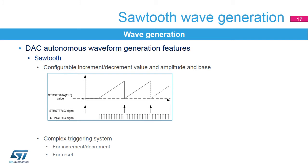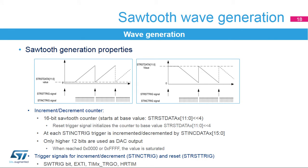The sawtooth counter starts from STRST data; each increment trigger then increments or decrements the ST INC data value. The increment trigger and reset trigger must be selected through the ST INC trig and STRST trig bit fields. This feature is useful to create the threshold voltage for a comparator to control motor current. The increment value is defined by the ST INC data bits in the DAC STRX register. The DAC output is used from the 12 MSB of the counter value. When the counter reaches 0x000 or 0xFFF, the value is saturated. The sawtooth direction is defined by the ST DIR bit in the DAC STRX register.